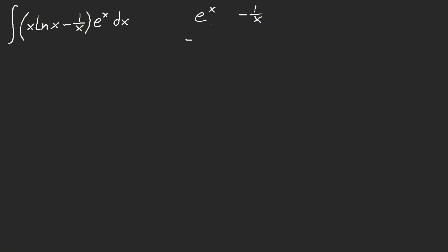Then, we have negative e to the x, and then we have negative ln of x. So, now we have the integral of negative ln of x, negative e to the x. We still have x ln of x, e to the x. What are we going to do with that?